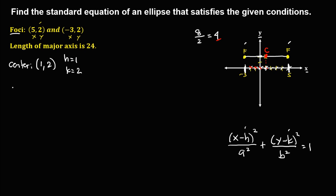To solve for a, since we have the major axis given, half of the major axis equals a. The major axis is 24, so 24 divided by 2 gives a is equal to 12.